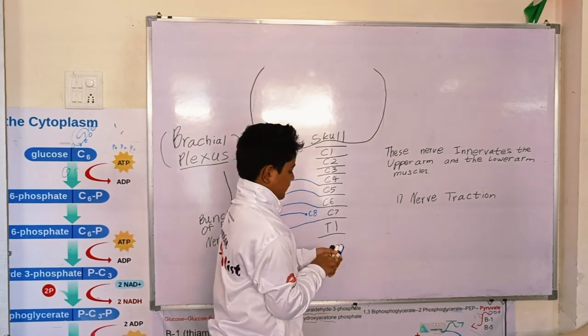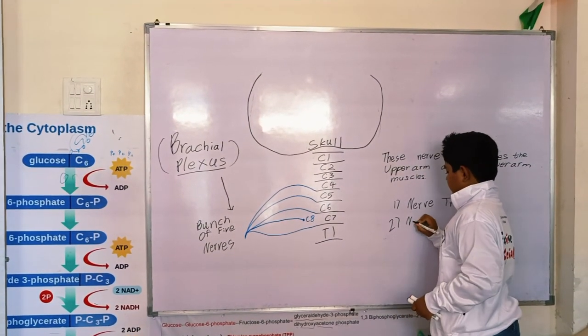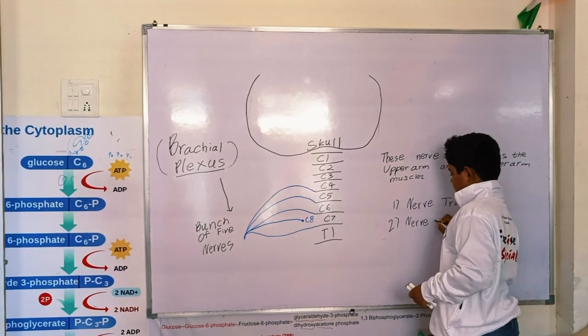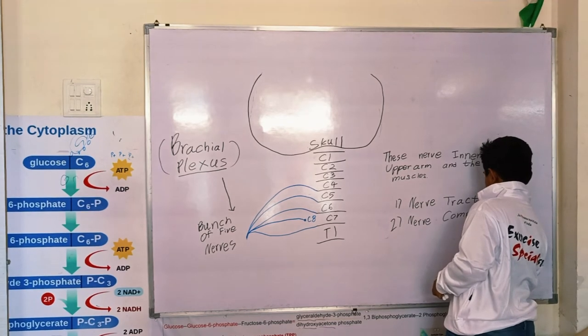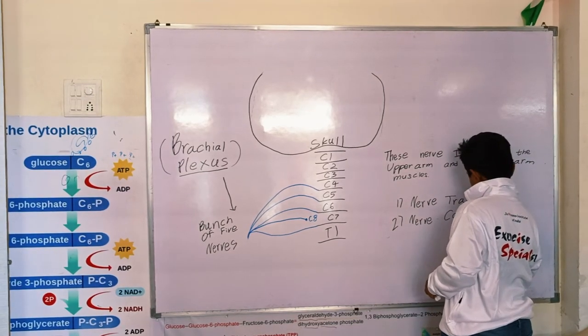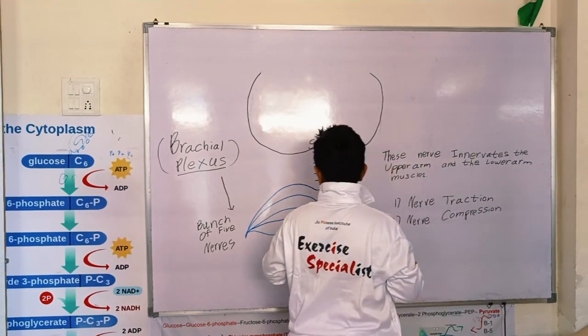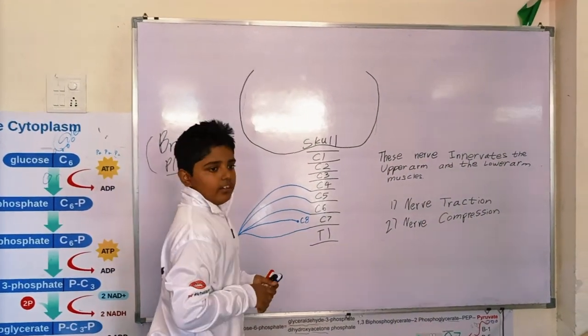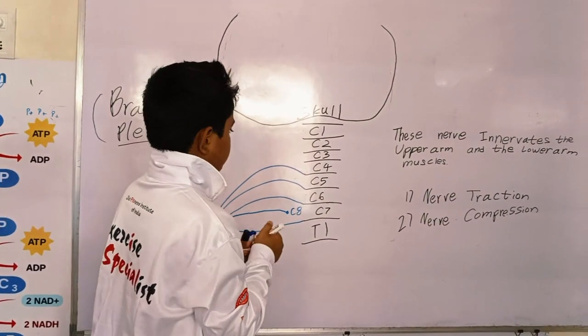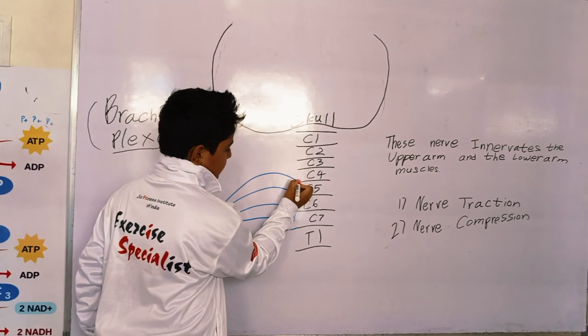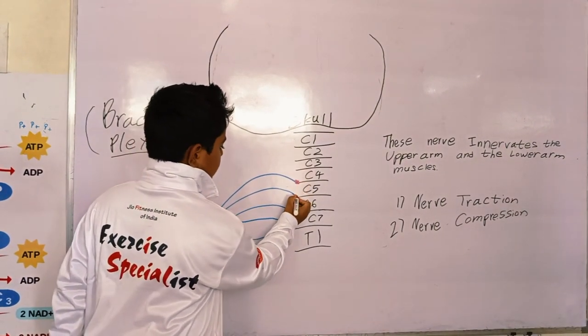And the second one is nerve compression. Nerve compression happens when the space in between our vertebrae compresses. That is when the nerves get trapped.